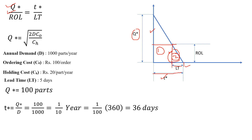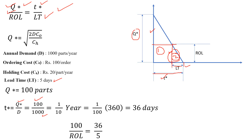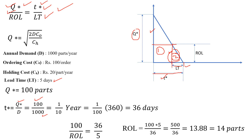Since the lead time is given in days, we convert T* = 1/10 year into days, which gives 36 days. Now substituting all values into the proportion equation: 100 / ROL = 36 / 5. Therefore, ROL = (100 × 5) / 36 = 500 / 36, which is approximately 14 parts.